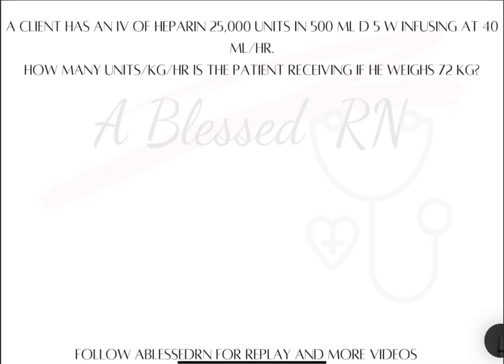A client has an IV of heparin, 25,000 units in 500 milliliters of D5W, infusing at 40 milliliters per hour. How many units per kilogram per hour is the patient receiving if he weighs 72 kilograms?